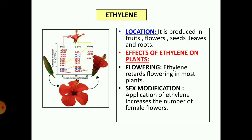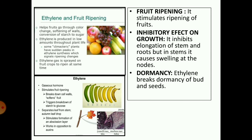Next we come to ethylene. It is the only gaseous hormone in plants. It is produced in the fruits, flowers, seeds, leaves, and roots. Effects: ethylene retards flowering in most plants. Sex modification: application of ethylene increases the number of female flowers, similar to auxin in this case. Fruit ripening: it stimulates ripening of fruits and we use ethylene for ripening of fruits. Inhibitory effect on growth: it inhibits elongation of stem and roots, but in stems it causes swelling at nodes. Dormancy: ethylene breaks dormancy of buds and seeds.